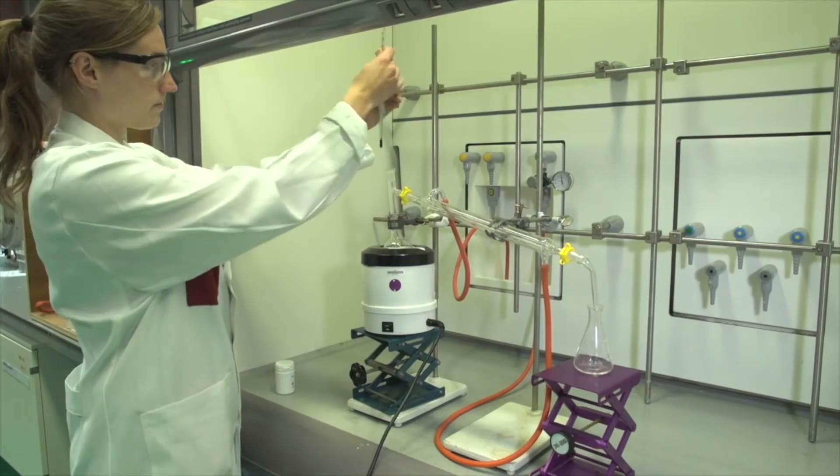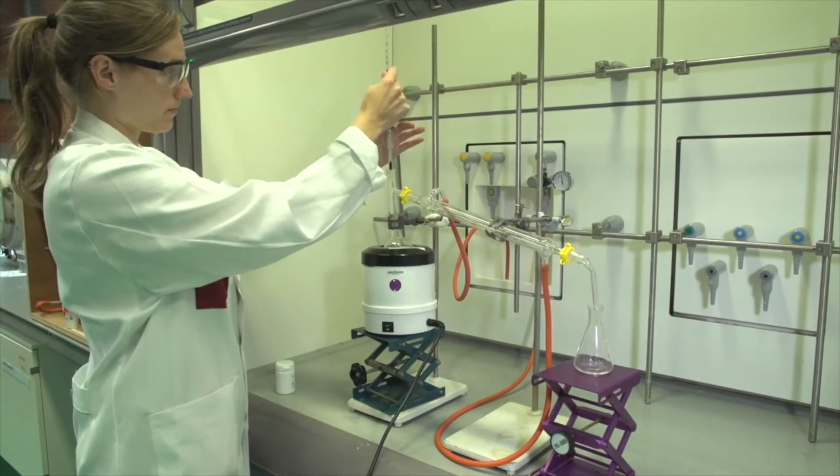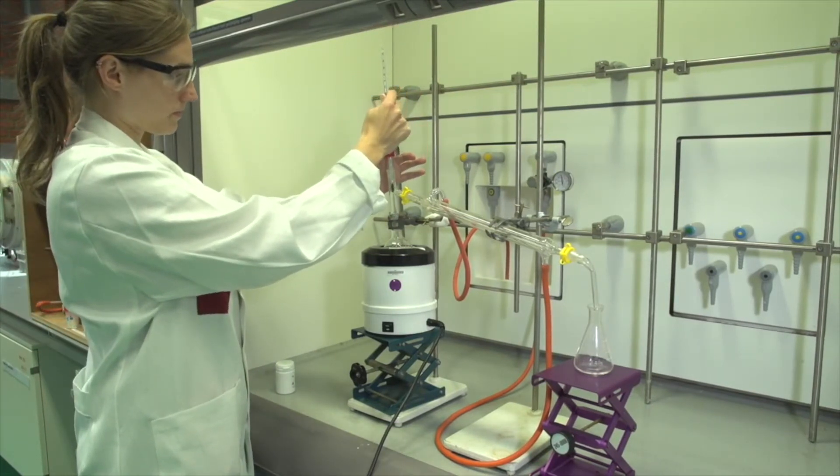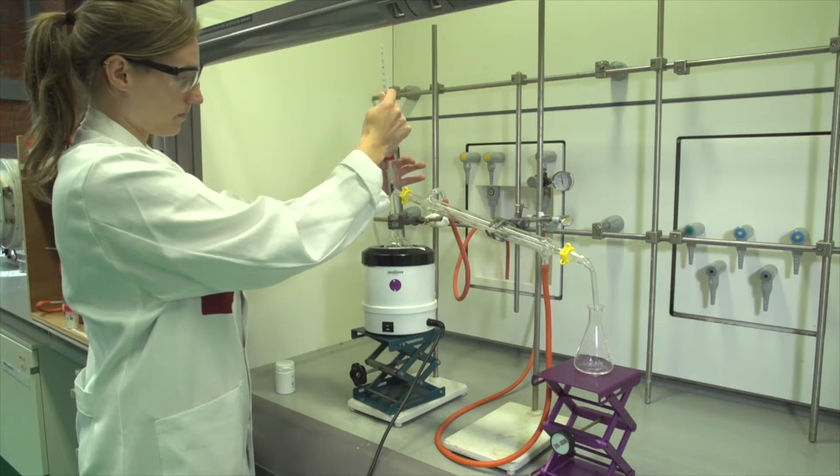Adjust the position of the thermometer on the distillation setup. Ensure that the bulb part of the thermometer lies in the T-junction area of the distilling head.